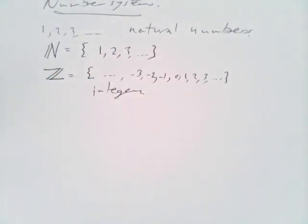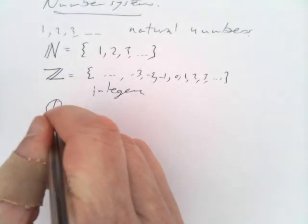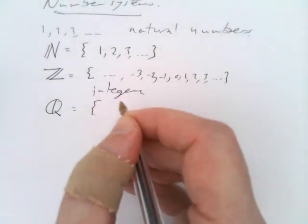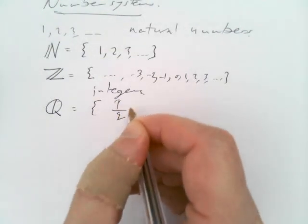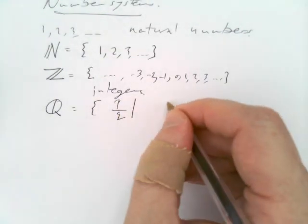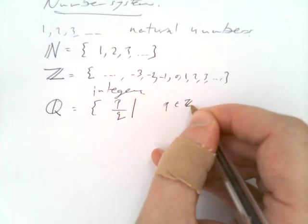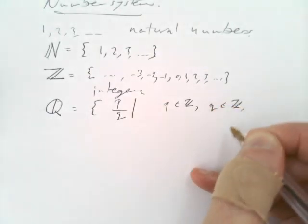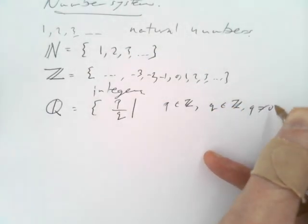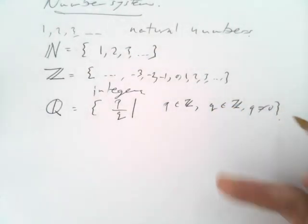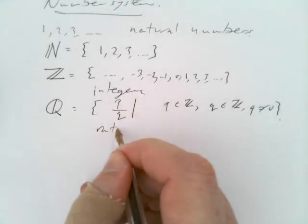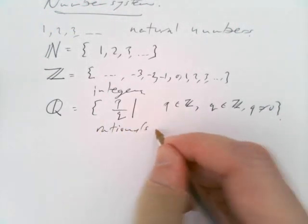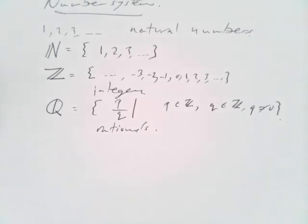We can have the set Q, which is the set of ratios p divided by q, such that p is an integer, and q is also an integer, and q is not zero. These are the rational numbers — the fractions of integers. That is the set of rational numbers.